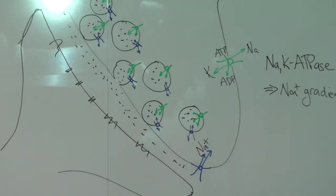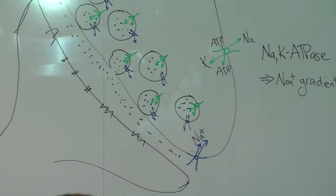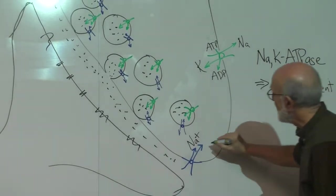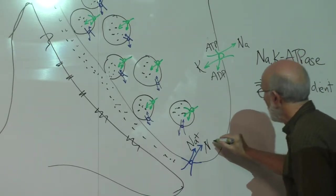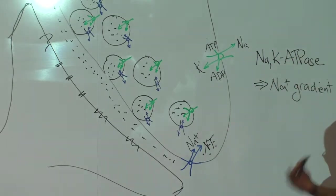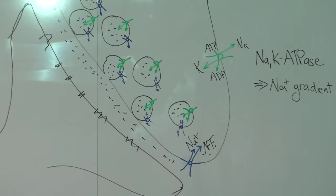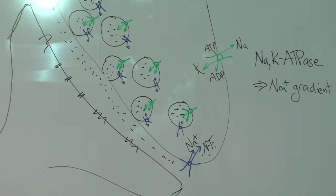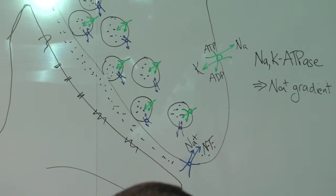Where are we going? What would the other arrow be? Neurotransmitter. This is a sodium-neurotransmitter co-transporter. I've just defined the molecular mechanisms for re-uptake of neurotransmitter.